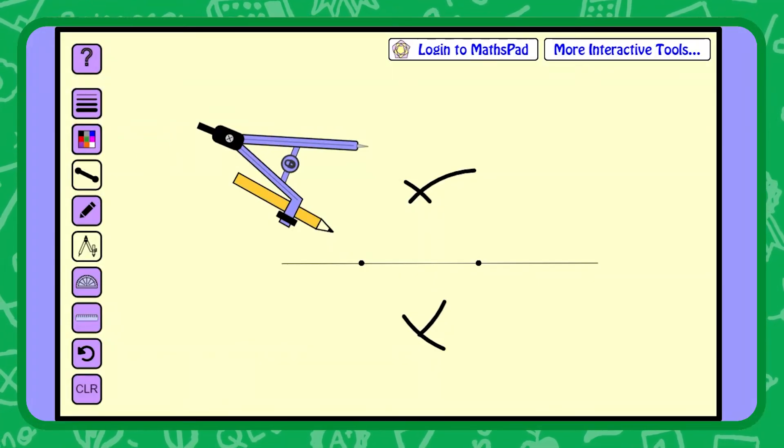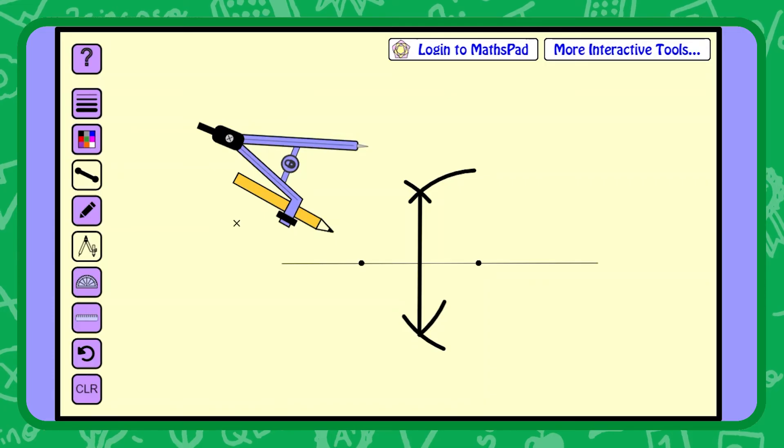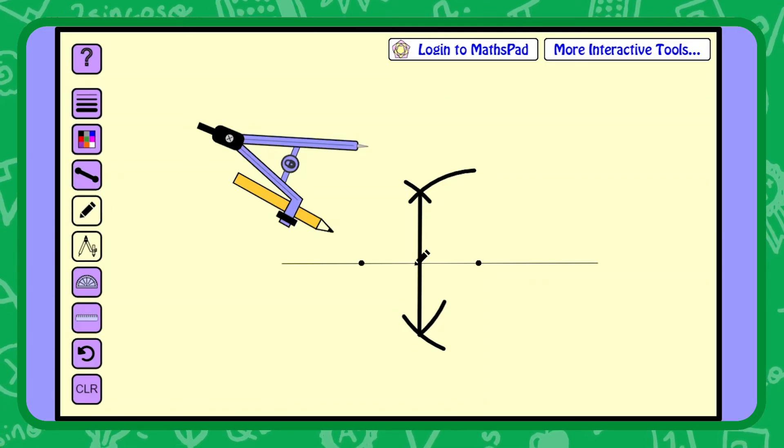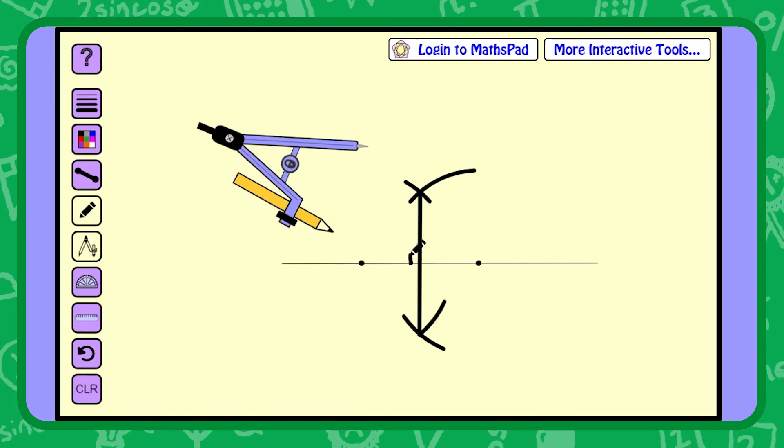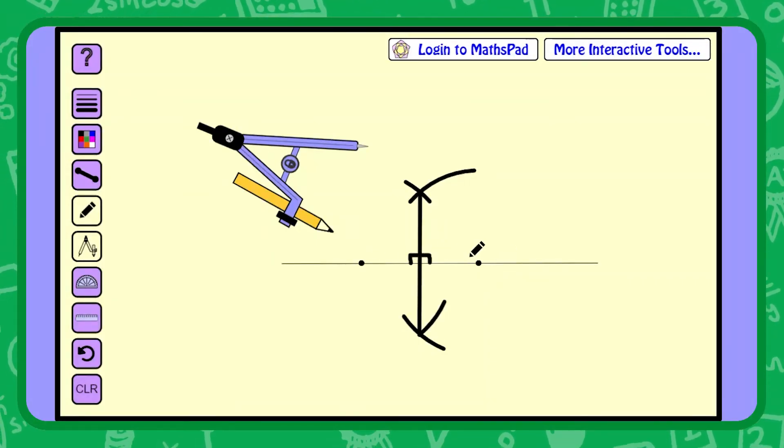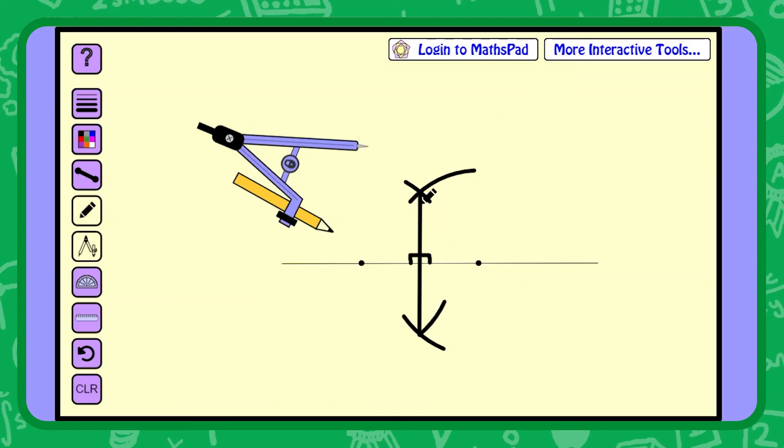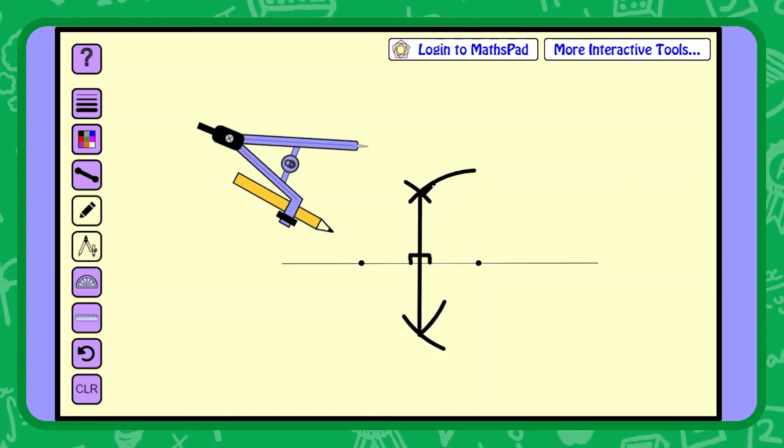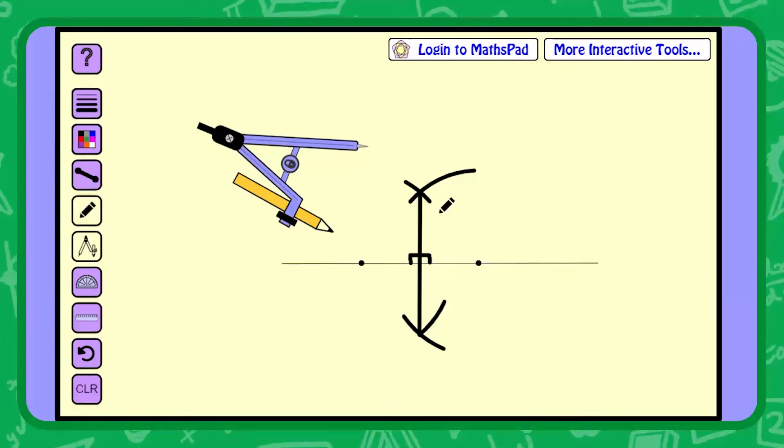And those two have now crossed. Joining up the points where those two cross has again formed the perpendicular line that splits these two points, this line, the distance between these two points, in half. We have drawn the perpendicular bisector by starting our compass point off at these two points and drawing a couple of arcs on the top and the bottom.